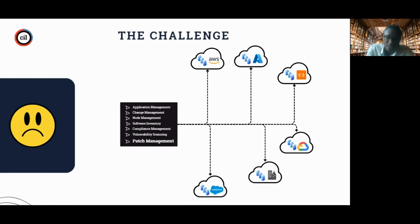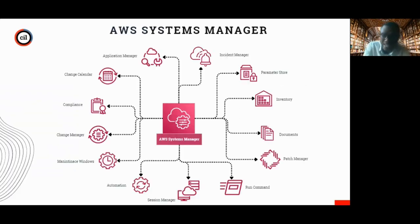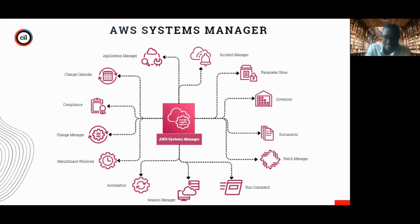Let me quickly introduce you to an AWS service called AWS Systems Manager — that's what we want to talk about today. Systems Manager does quite a lot of things and is one of the most robust services AWS has to offer. Another thing we take into cognizance at Secure Intelligence is that we are very careful about the security of your workload — we want your servers secure. Systems Manager does a lot of things.